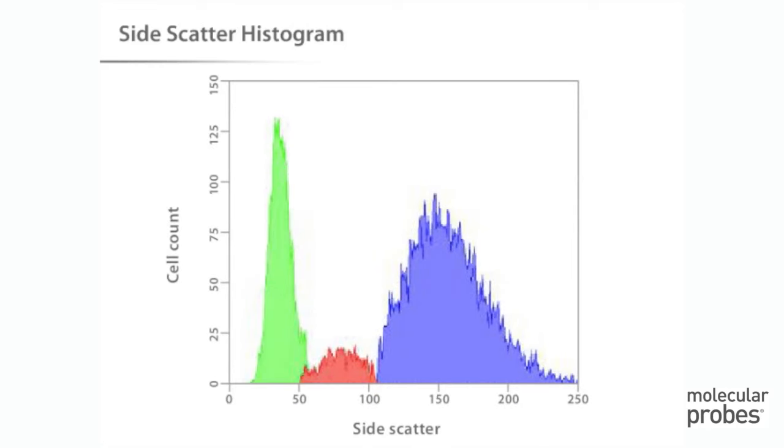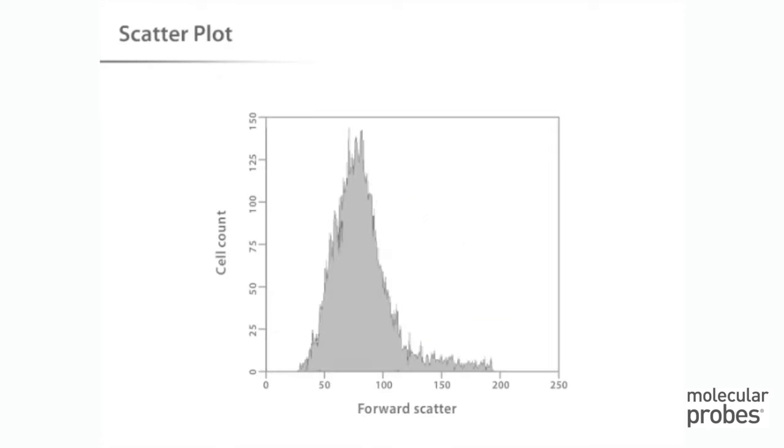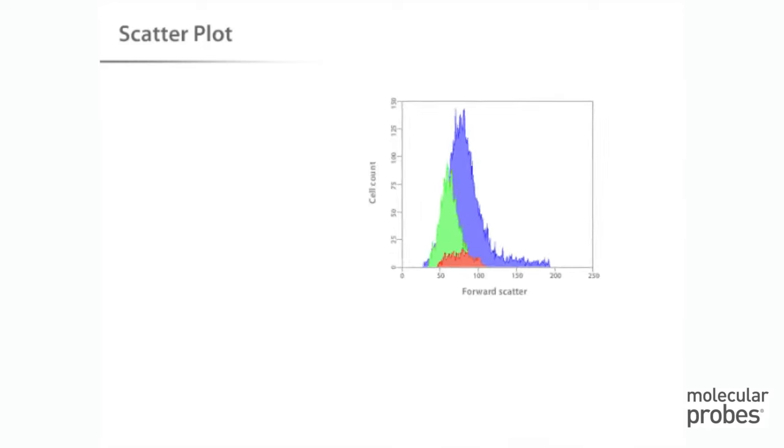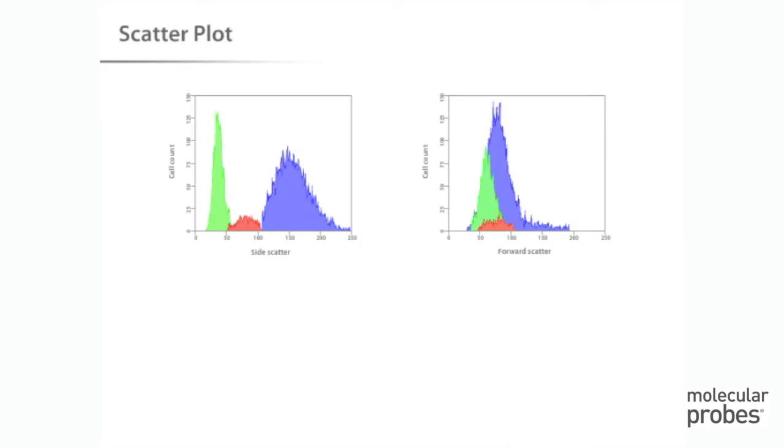The signals collected by the side scatter detector can be plotted on one-dimensional histograms, like we saw for forward scatter. The one-dimensional histograms we have seen so far do not necessarily show the complexity of the cell populations. For example, what appears to be a single population in the forward scatter histogram is, in reality, multiple populations that can only be discerned by looking at the data in a second dimension.